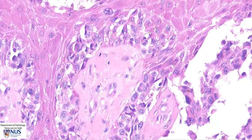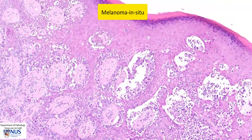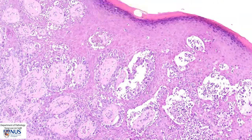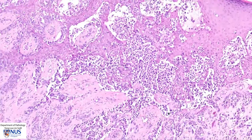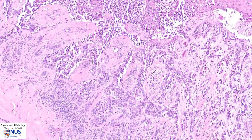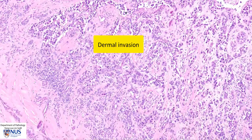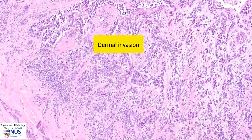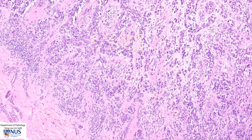These cells are part of the in situ component of the melanoma — so we have some in situ melanoma here. But over here we can see that the melanoma tumor cells are actually infiltrating downwards into the dermis.